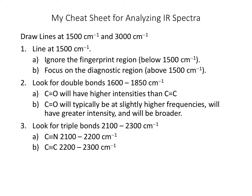The first thing I do when I analyze an IR spectrum is draw lines at 1,500 wavenumbers and 3,000 wavenumbers. The line at 1,500 wavenumbers separates the spectrum into the fingerprint region, which is below 1,500 wavenumbers and we're going to ignore, and the diagnostic region where we focus our attention — everything above 1,500 wavenumbers.